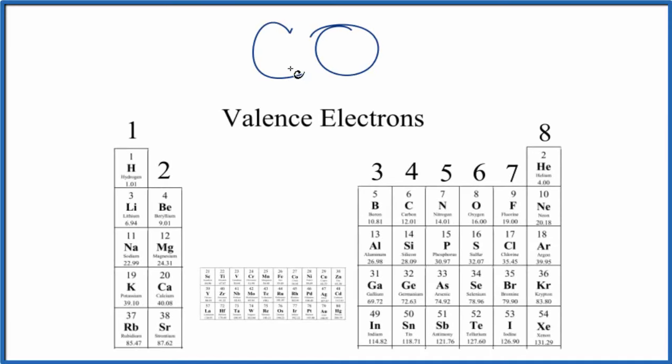To draw the Lewis dot structure for CO, this is carbon monoxide, the first thing we need to do is count the valence electrons up. So you look at the periodic table here.